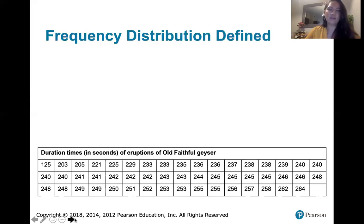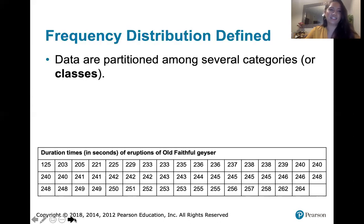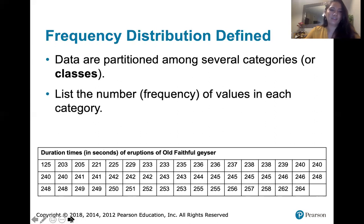In a frequency distribution, data are partitioned among several categories — we're going to call those categories classes — and then within each class we're going to list the frequency, or number of values, in each category.